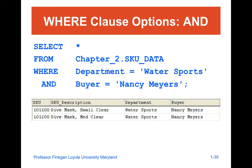If we get into additional options and clauses, you're then going to be able to search on more than one conditional parameter. This SQL will show both WHERE the department equals water sports AND the buyer equals Nancy Meyers. You can do more than one condition, which allows you to parse out the data and fine-tune results while setting multiple conditional expressions.